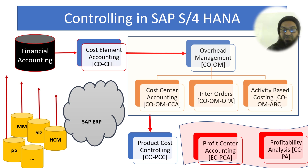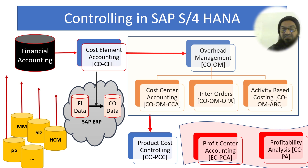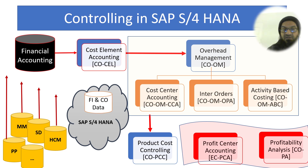In SAP ERP (the earlier version), there were two separate logical data repositories — one for Financial Accounting and one for Controlling — and Cost Element Accounting facilitated data transfer and reconciliation between them. In SAP S/4HANA, the newer version, there is just one data repository for both modules, so Cost Element Accounting is no longer a required module.